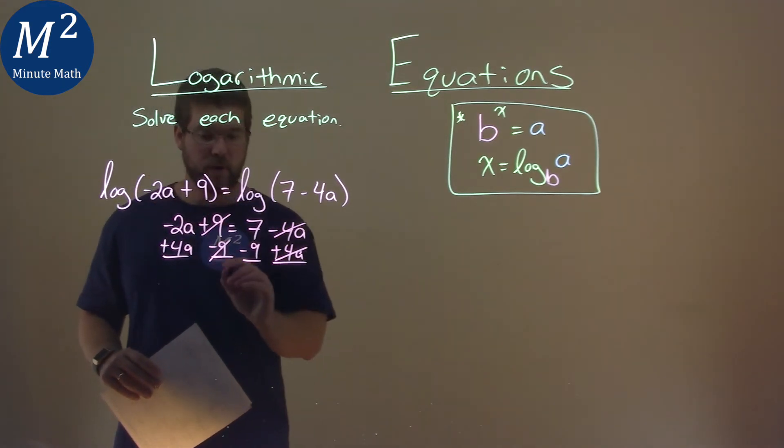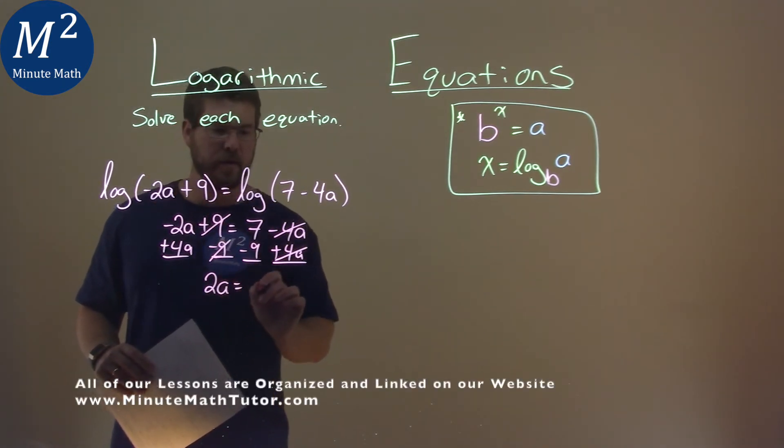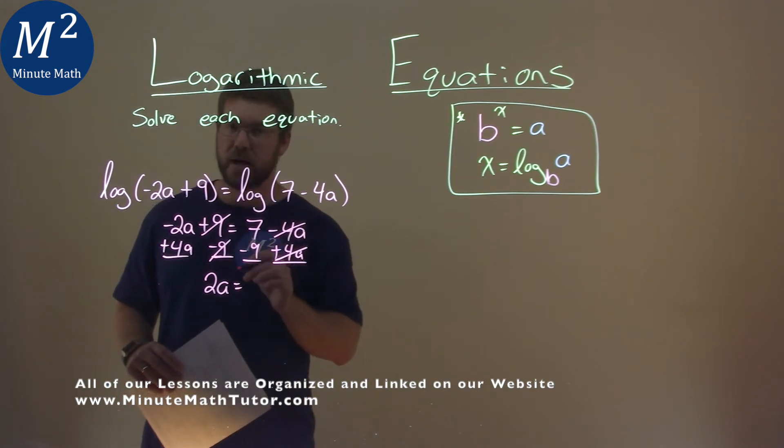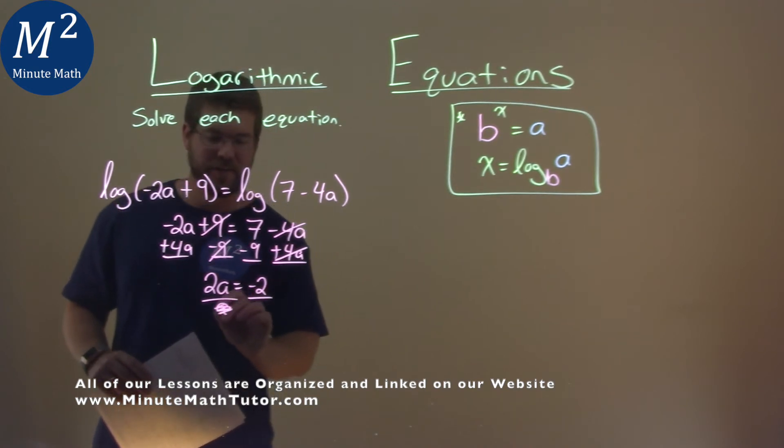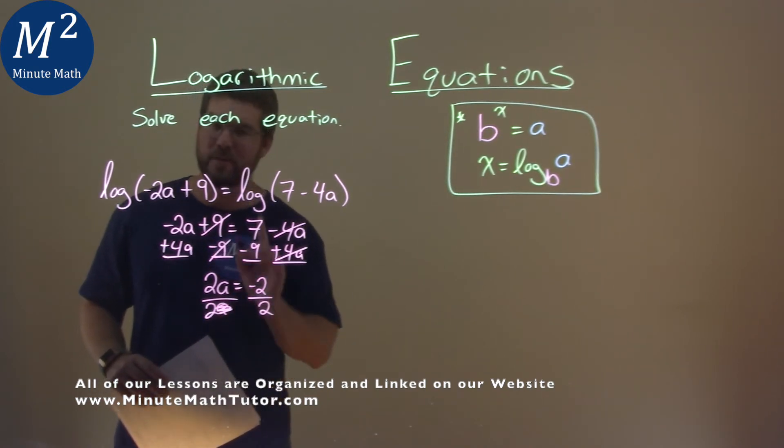Negative 2a plus 4a is 2a. 7 minus 9 is negative 2. I divide both sides by, not a, by 2. Be careful there.